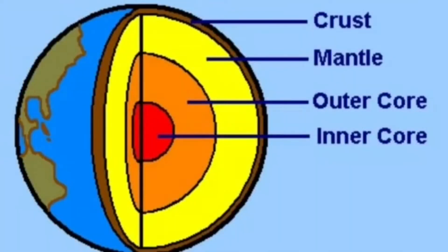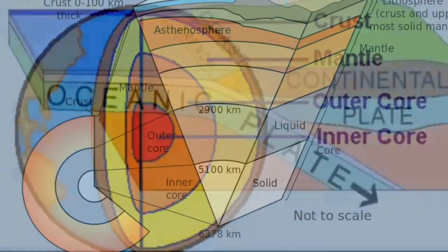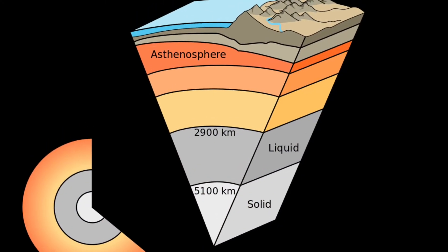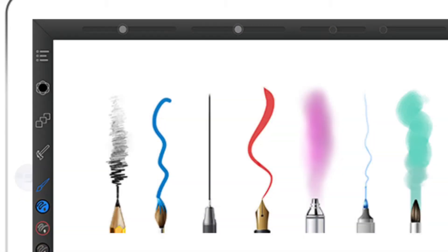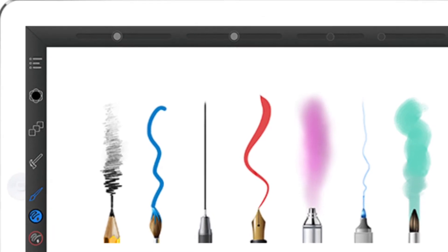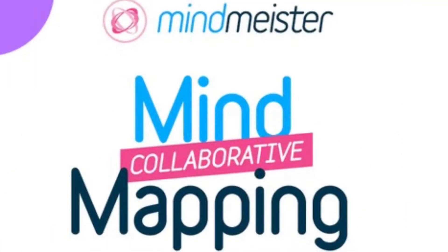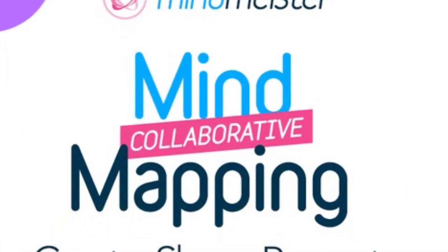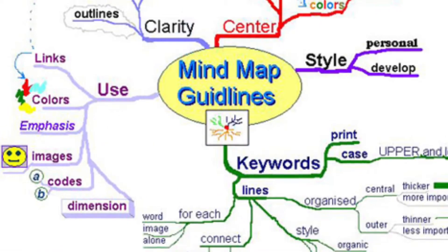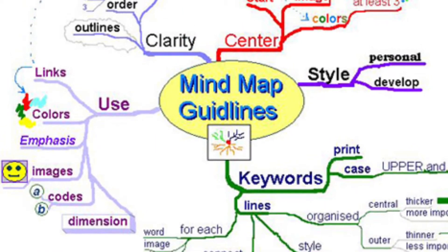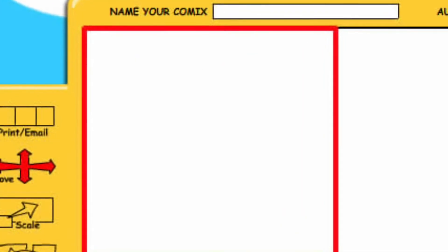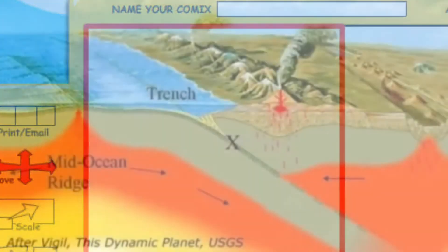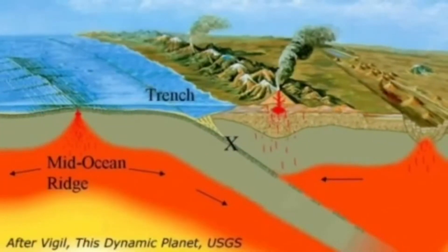Next, students will learn about the different layers of the Earth and draw a picture representing the Earth's structure using the Brushes app. They will create a collaborative mind map about the Earth's layers using the MindMeister app, and use a comic strip creator to illustrate a story about magma's journey from the Earth's core to the surface.